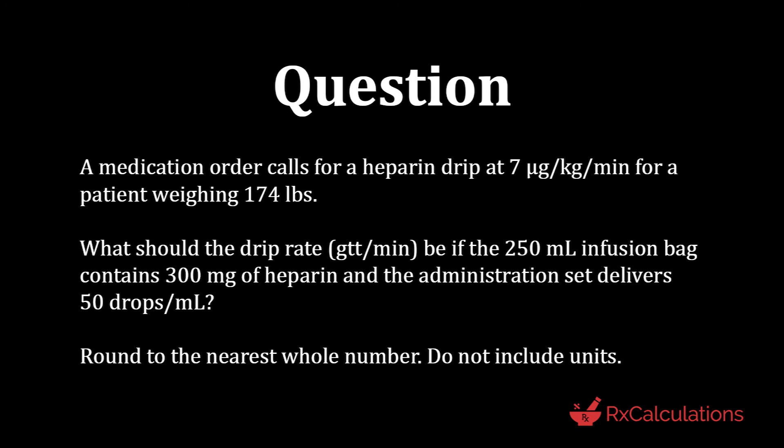The medication order calls for a Heparin drip at 7 micrograms per kilogram per minute for a patient weighing 174 pounds. What should the drip rate in drops per minute be if the 250-milliliter infusion bag contains 300 milligrams of Heparin and the administration set delivers 50 drops per milliliter? Round to the nearest whole number; do not include units.